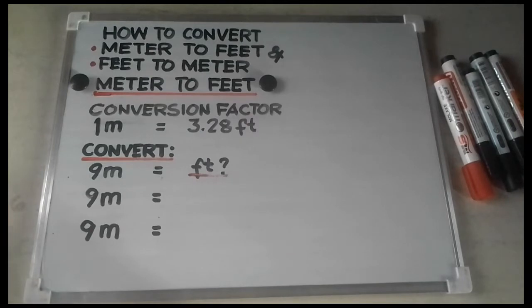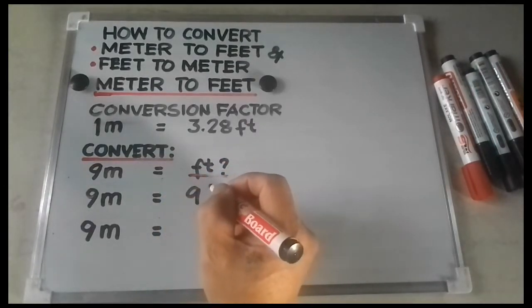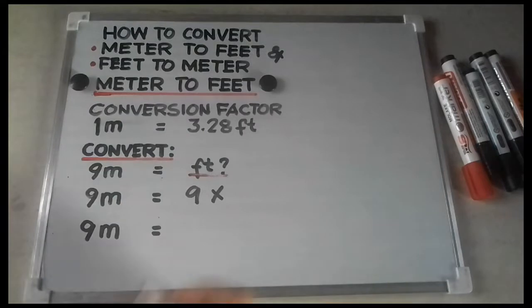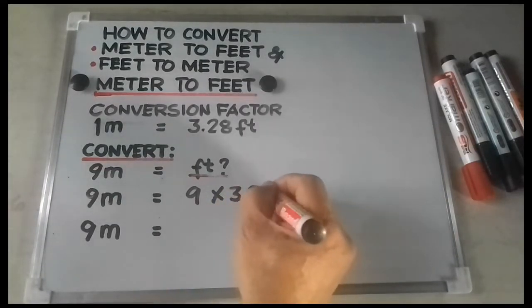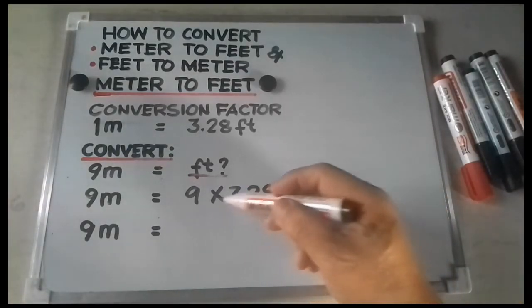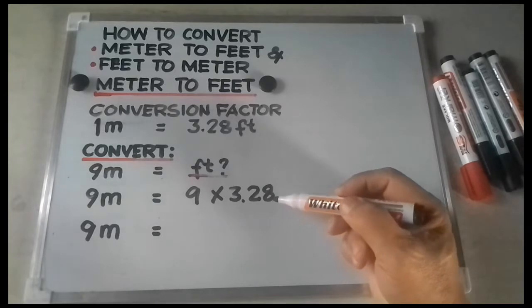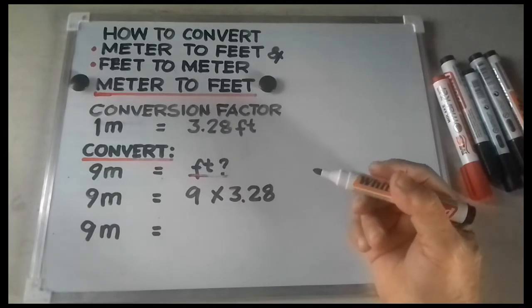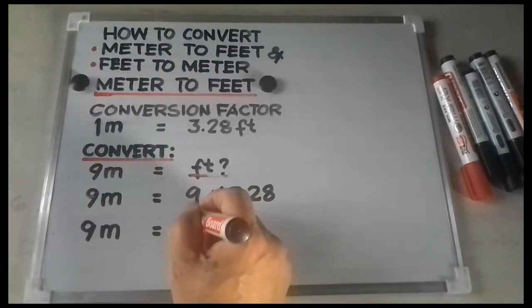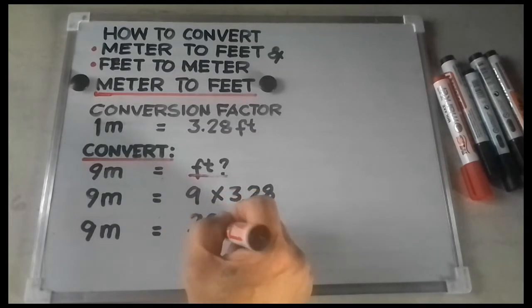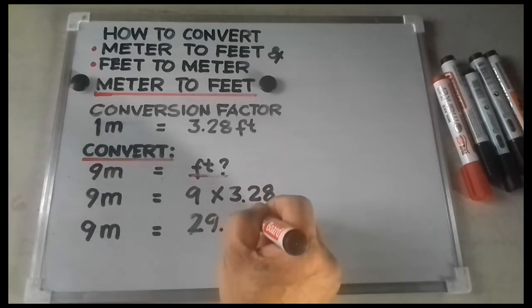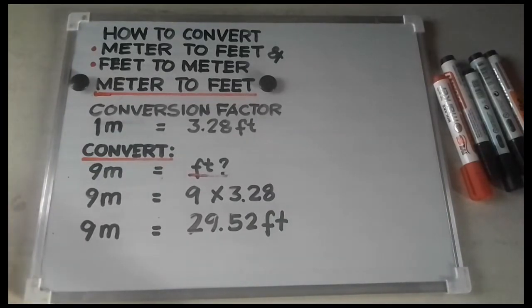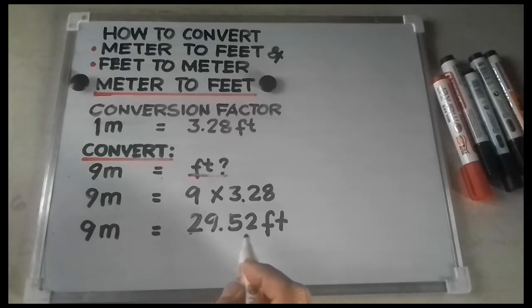So I'll copy 9 meters and then multiply it by 3.28 feet. So 9 times 3.28 feet is equal to 29.52 feet. Okay, now 9 meters is equivalent to 29.52 feet.